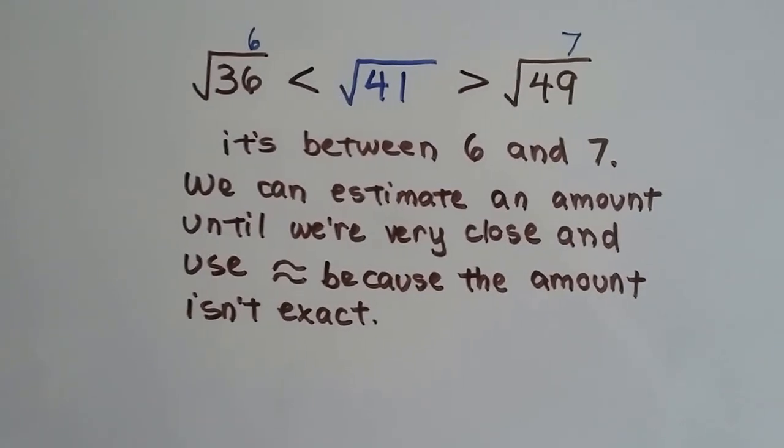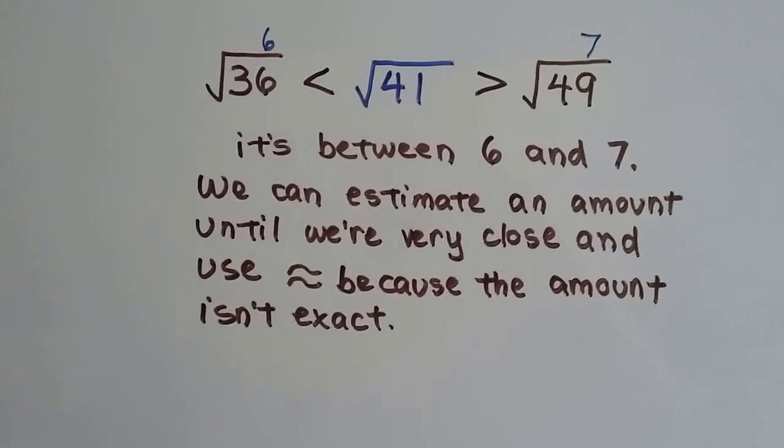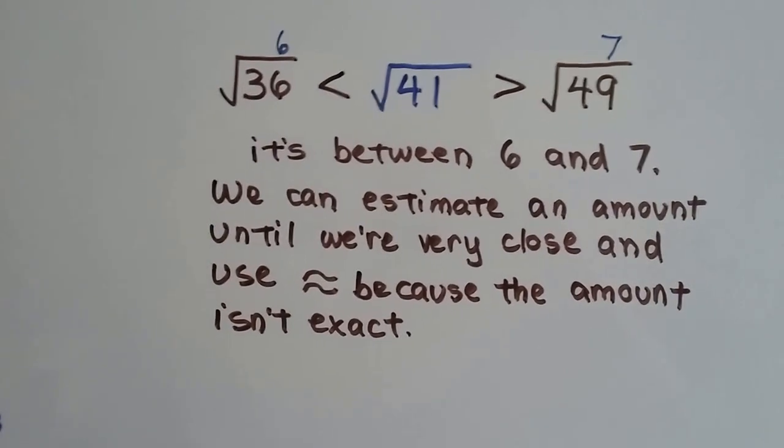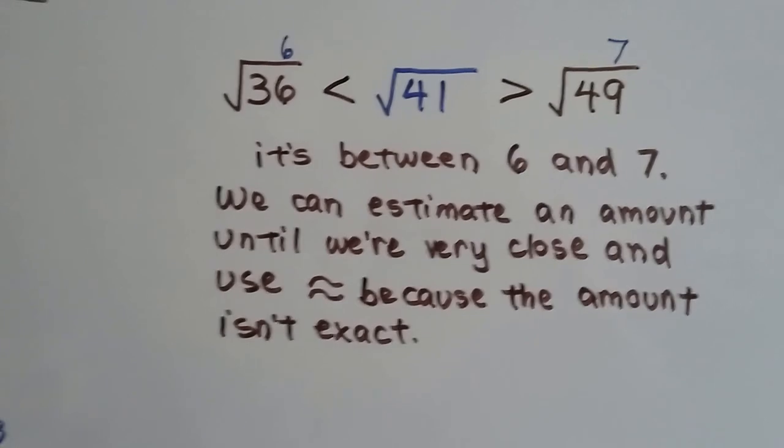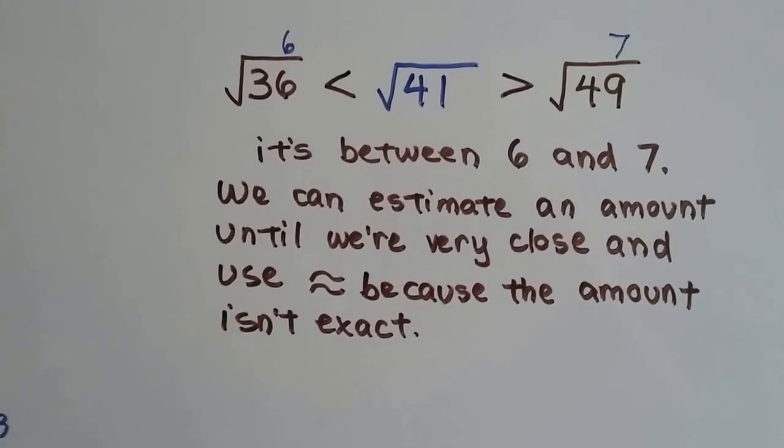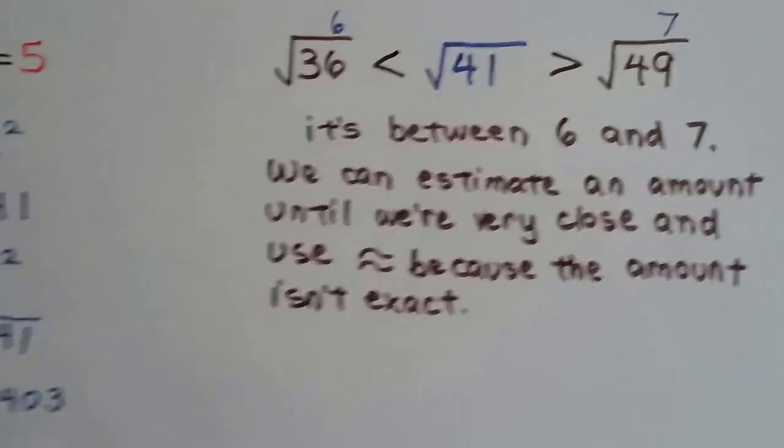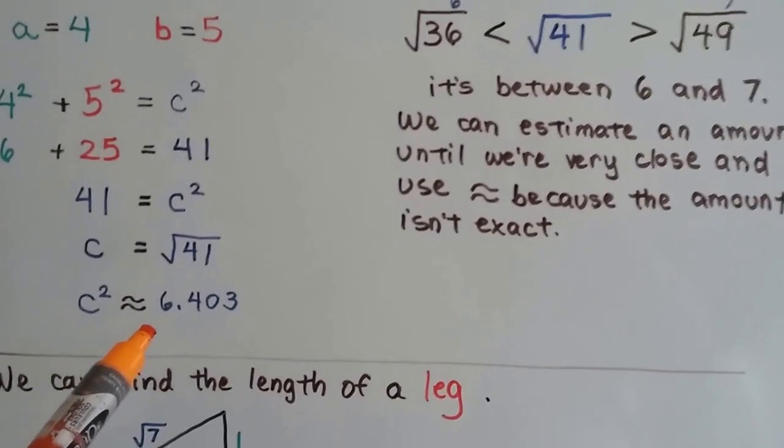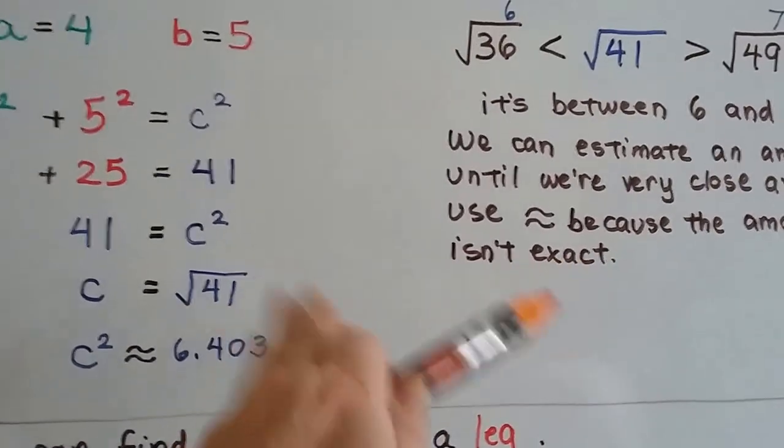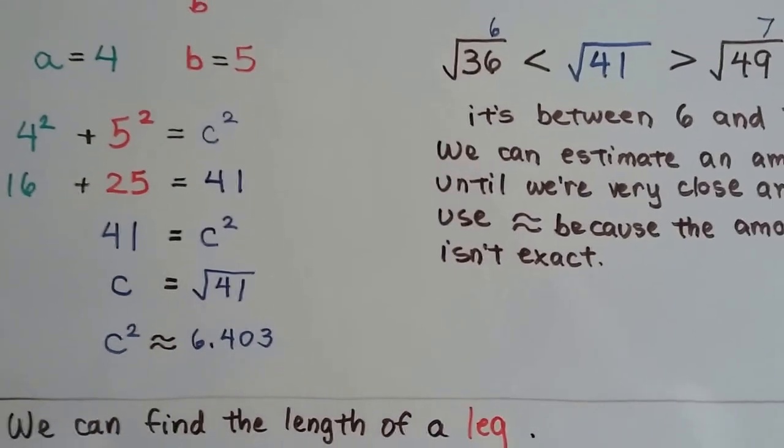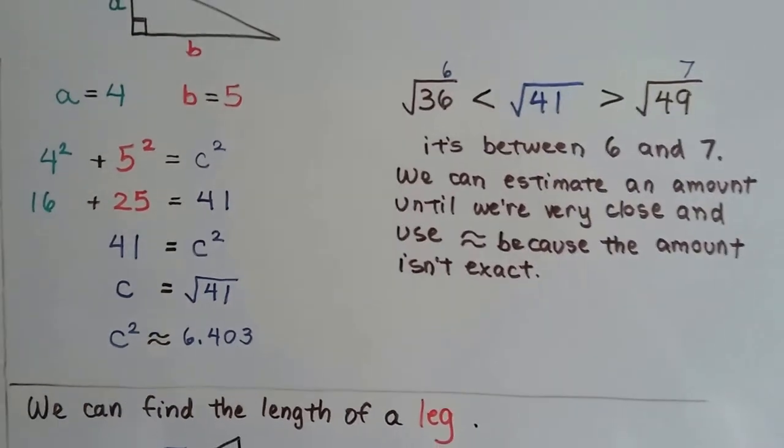So, we estimate an amount until we're close, and then we use the approximate symbol, because the amount isn't exact. So we could try 6.2 times 6.2, or 6.7 times 6.7, and if it's too big or too small, then we move to a different number. And I came up with 6.403. I could have even rounded it to 6.4. And then I used the approximate symbol. See how I did that?